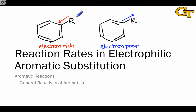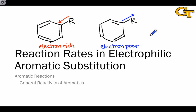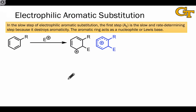This idea is the key to understanding the relative rates of different types of substituted benzenes in electrophilic aromatic substitution, since in this reaction type the ring acts as a nucleophile in the rate-determining or slow step.